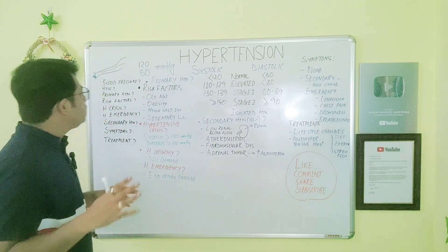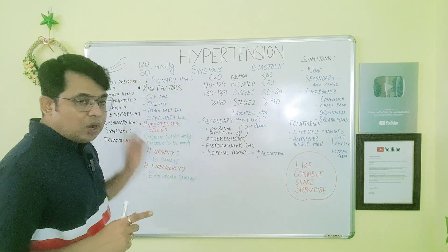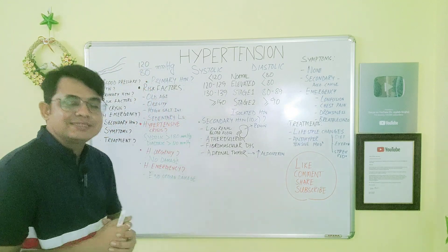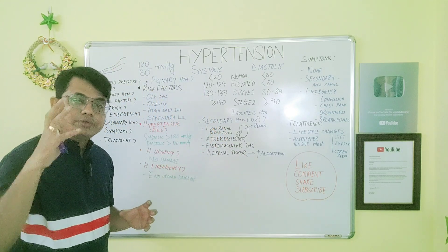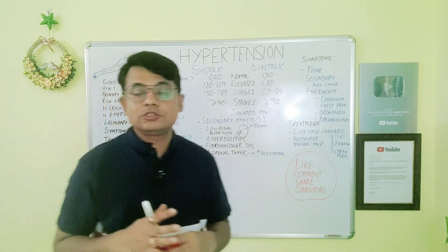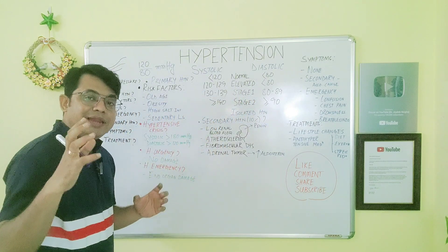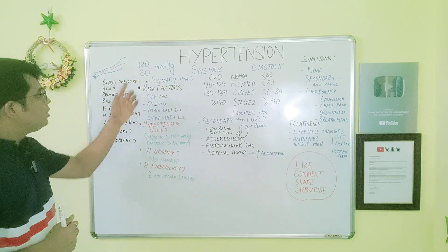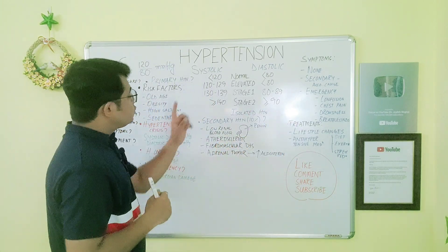Blood pressure is denoted as 120 by 80 millimeter of mercury — this is a normal blood pressure. Here 120 is the systolic blood pressure, that means the blood pressure present during contraction of the heart, and the number below, 80, is the diastolic blood pressure, that means the pressure of blood during relaxation of the heart.